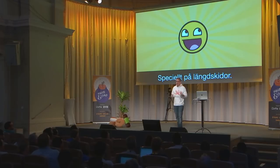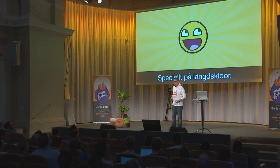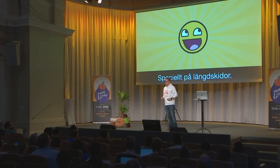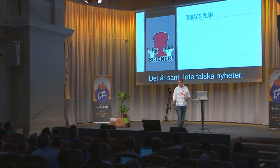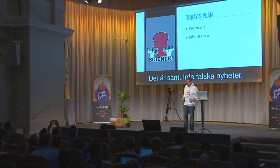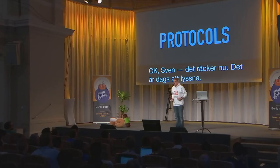Sometimes it's easier to learn what's right by seeing what's wrong. So in this talk, as fast as I can possibly do it, we'll look at four things: number one, protocols; number two, inheritance; number three, crashing; and number four, coding your UI. Starting with protocols.